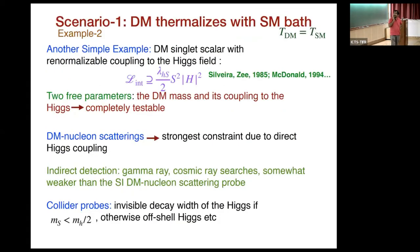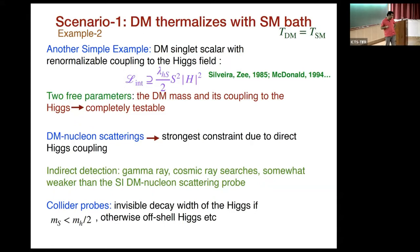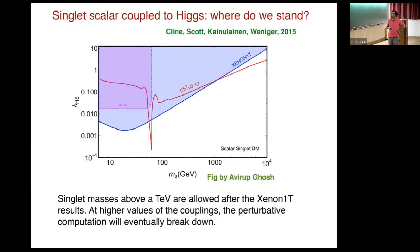The next simple example is a singlet scalar field with a renormalizable coupling to the Higgs boson. Now we have two free parameters instead of one: the mass and the coupling to the Higgs. The strongest constraints here come from dark matter–nucleon scatterings; indirect detection is not as competitive. Collider probes are the invisible decay width of the Higgs if the mass is in the right ballpark; otherwise we need to go to off-shell Higgs. The xenon one-ton data probes up to a mass of about a TeV, but higher masses are still consistent. As we go to higher values of the coupling, the perturbative computation will eventually break down.